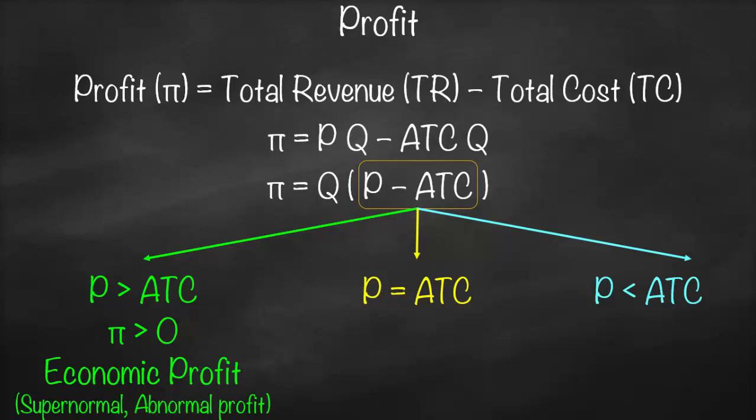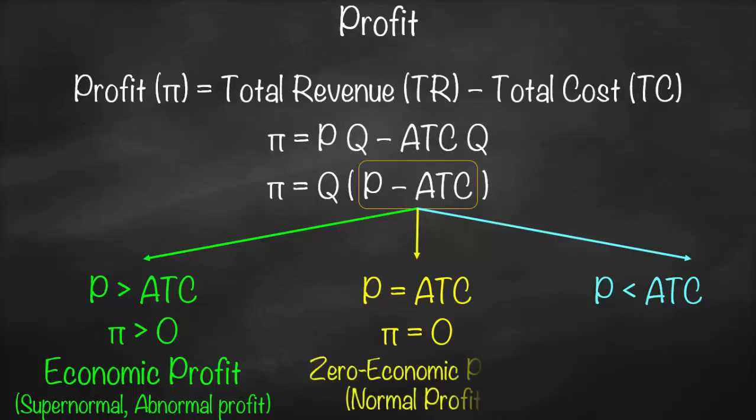But if price is equal to average total cost, it means our profit will be equal to zero — because it will be Q multiplied by zero, which equals zero. So what does profit equal to zero mean? It is called zero economic profit, or normal profit.